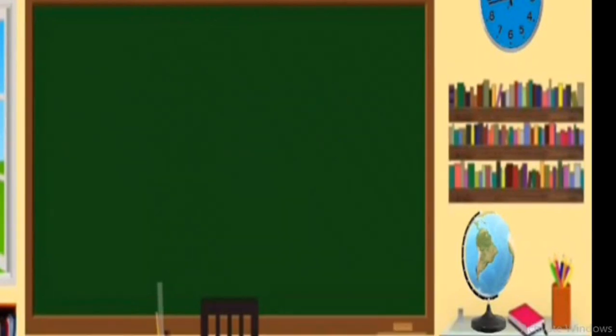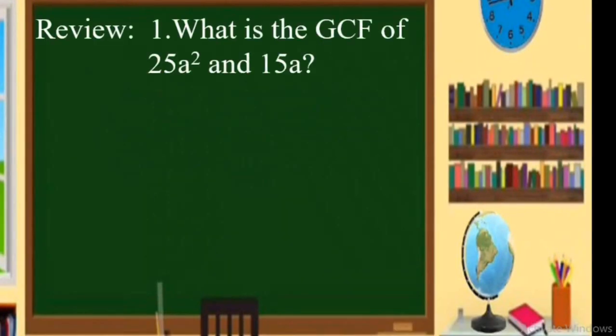The first example: what is the greatest common factor of 25a squared and 15a? From these two given terms, we're looking for a certain common factor, and that is 5a, because 5a is the greatest common factor that can divide both 25a squared and 15a.